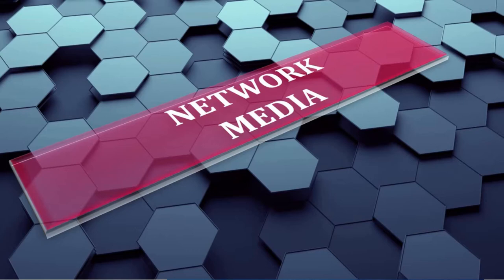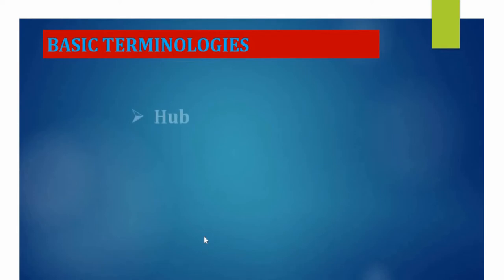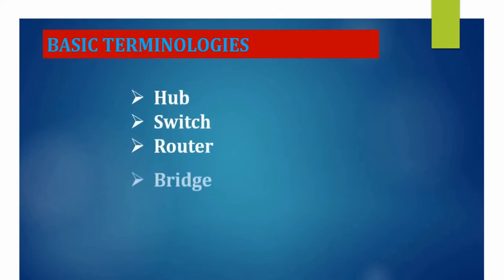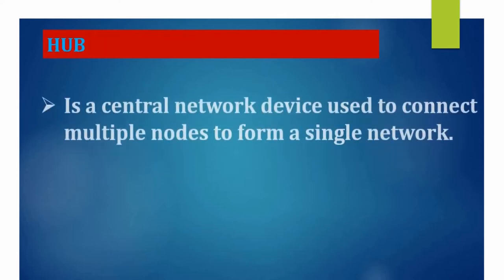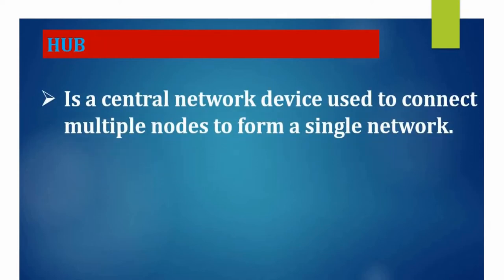The basic terminologies associated with network medium are hub, switch, router, and bridge. Each of these are a particular medium which transmit data from source to destination device. Hub is a central device which is used to connect n number of nodes to form a single network. In star topology, multiple devices will be connected to a single node — that single node is called a hub.